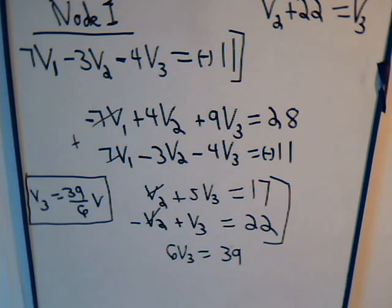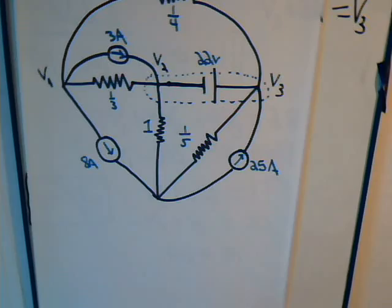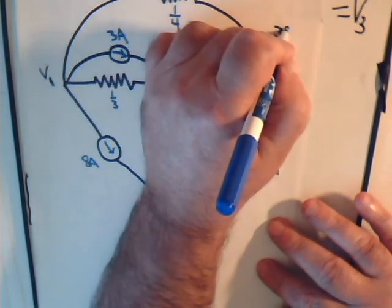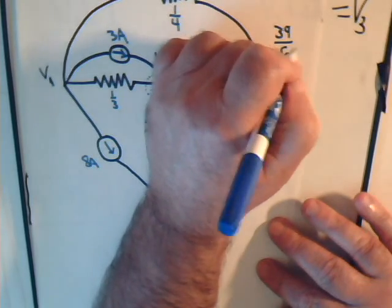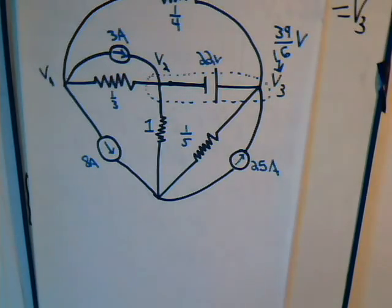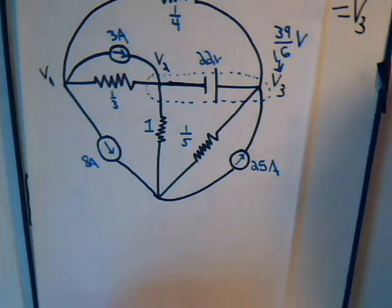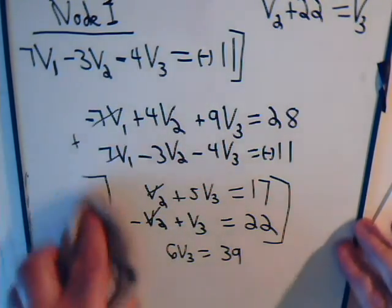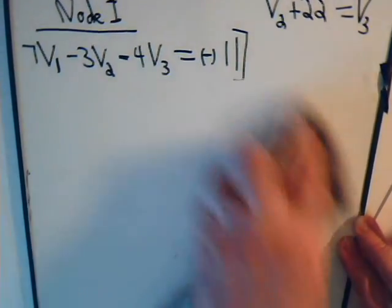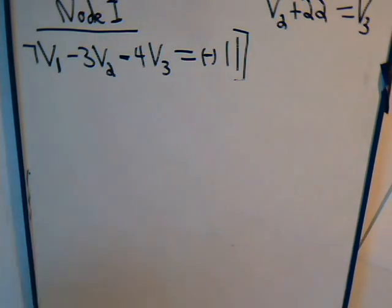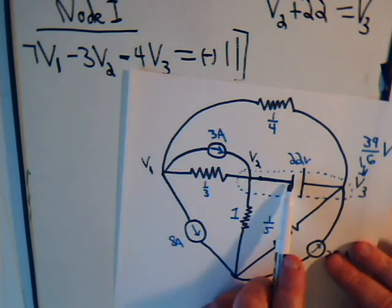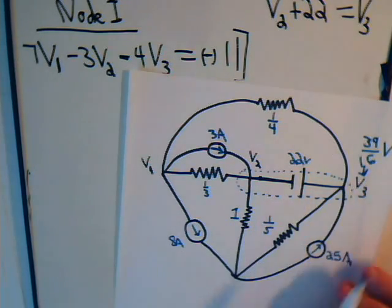So we have V3, better yet let's write that down here, plus 39 over 6 volts. Okay, and what about V2? Well, earlier we had determined, in fact it was just looking at the diagram, that V2 plus 22 volts gets us up to V3.